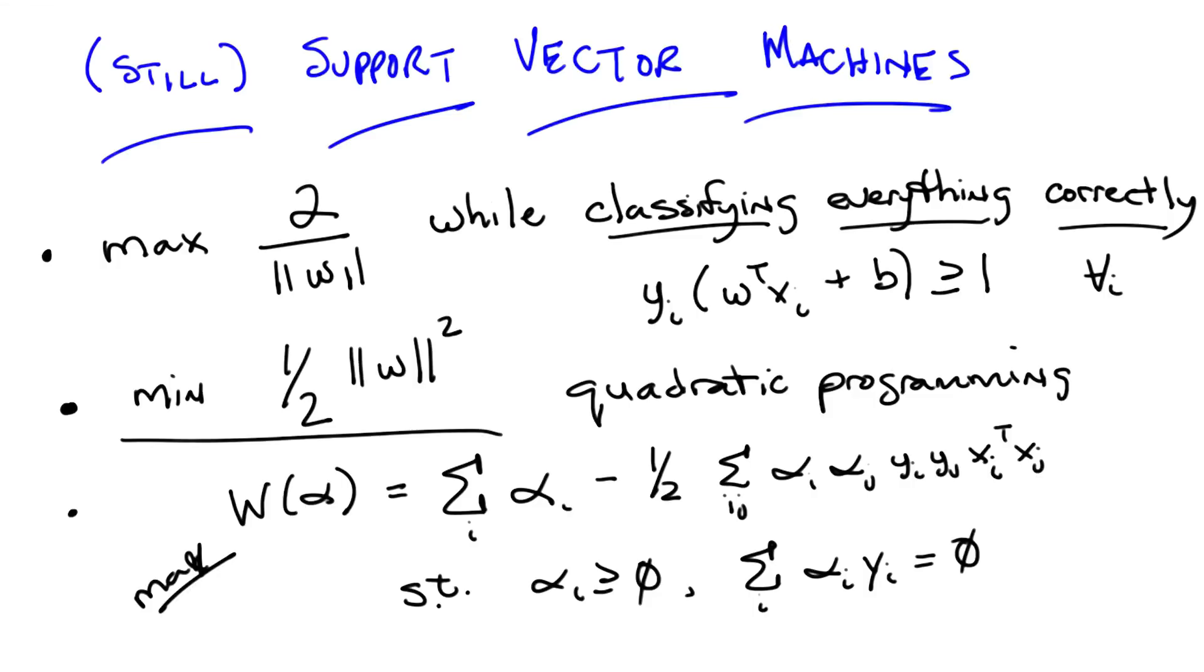We've argued that that's equivalent to minimizing 1 half times the length of w squared, subject to the same constraints. And then notice, because we happen to know this, that you can convert that into a quadratic programming problem, which we know how to solve. And it turns out that quadratic programming problem has a very particular form.